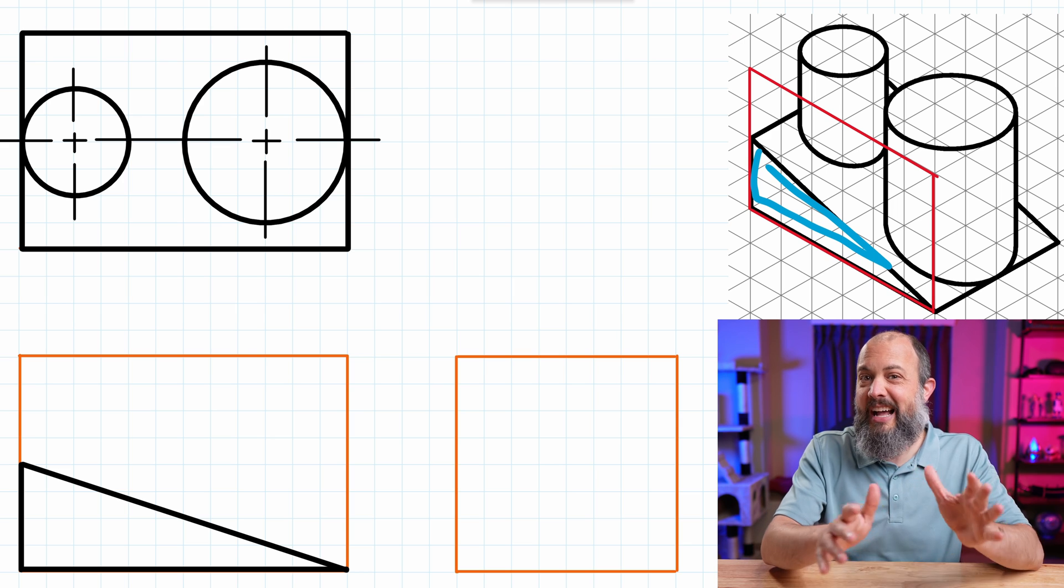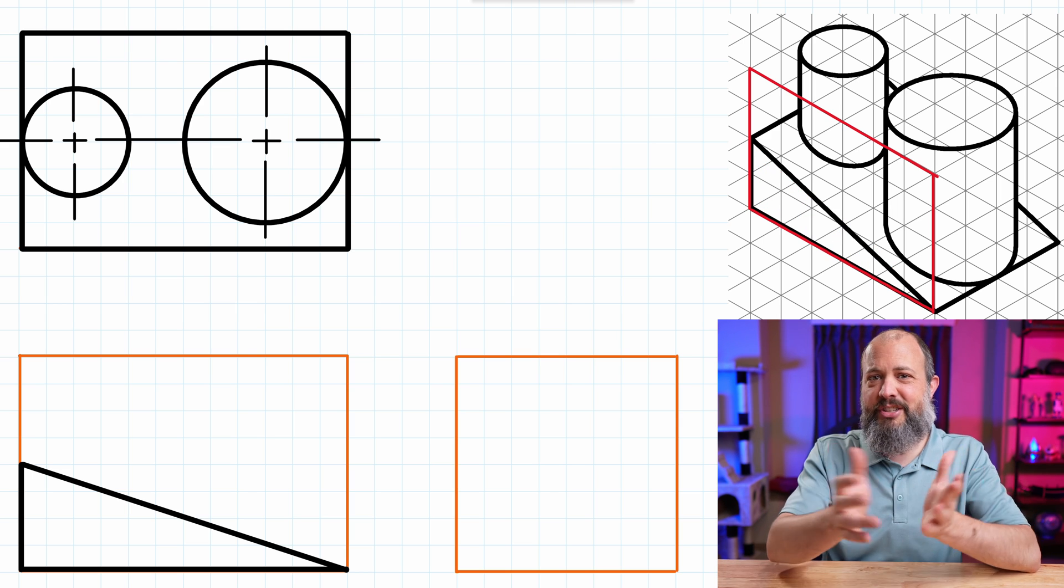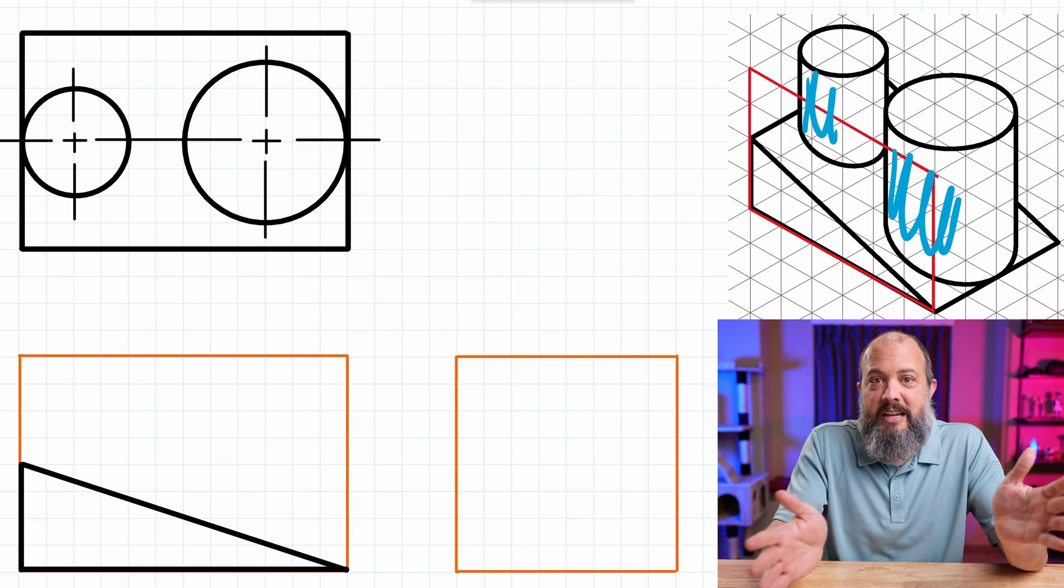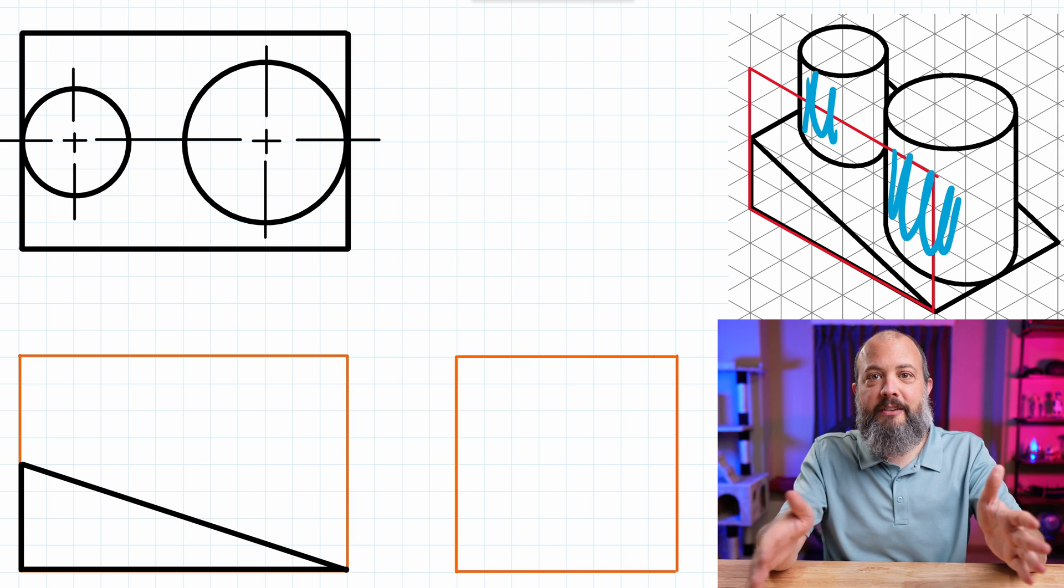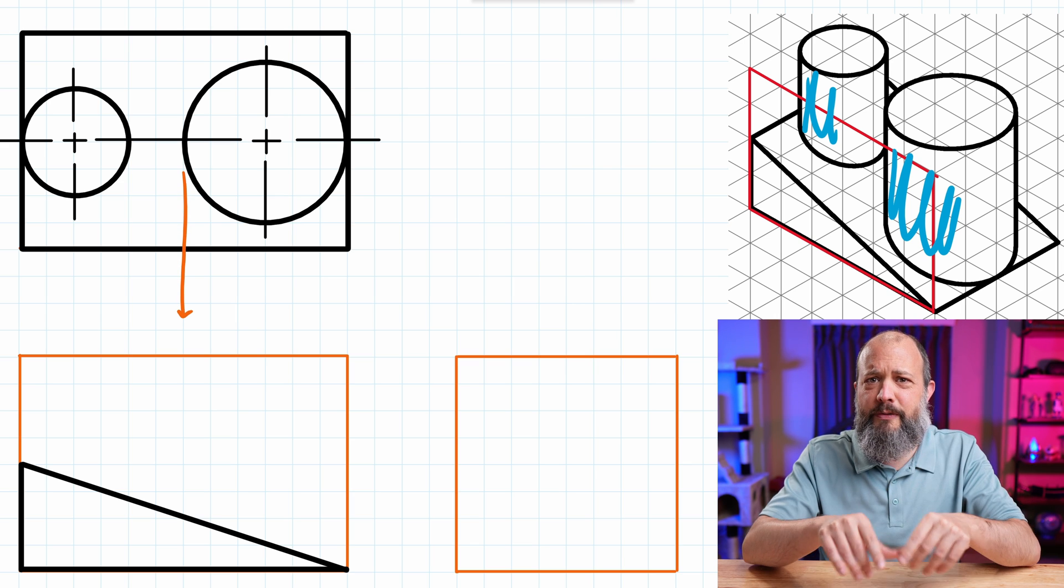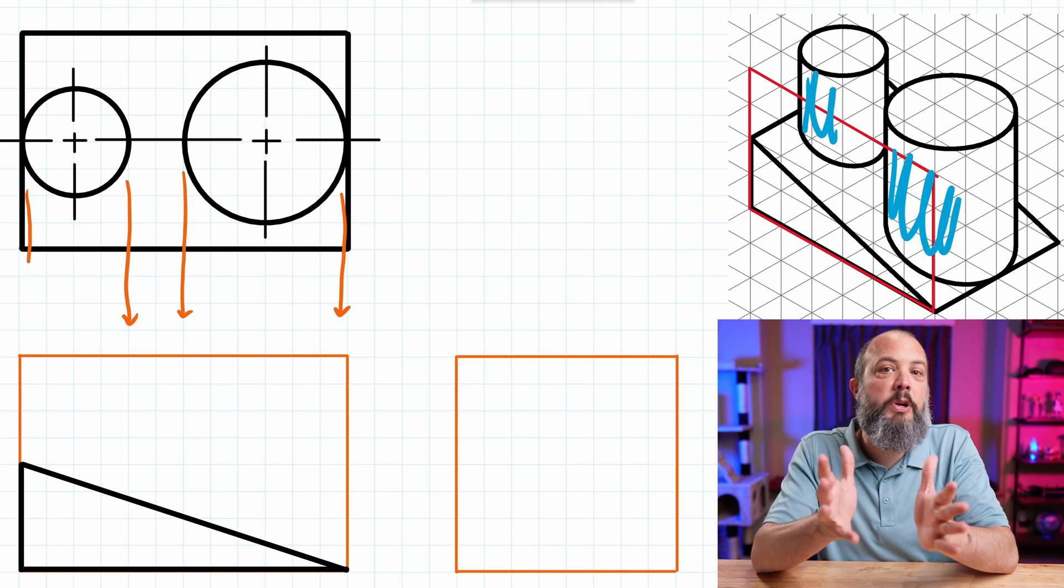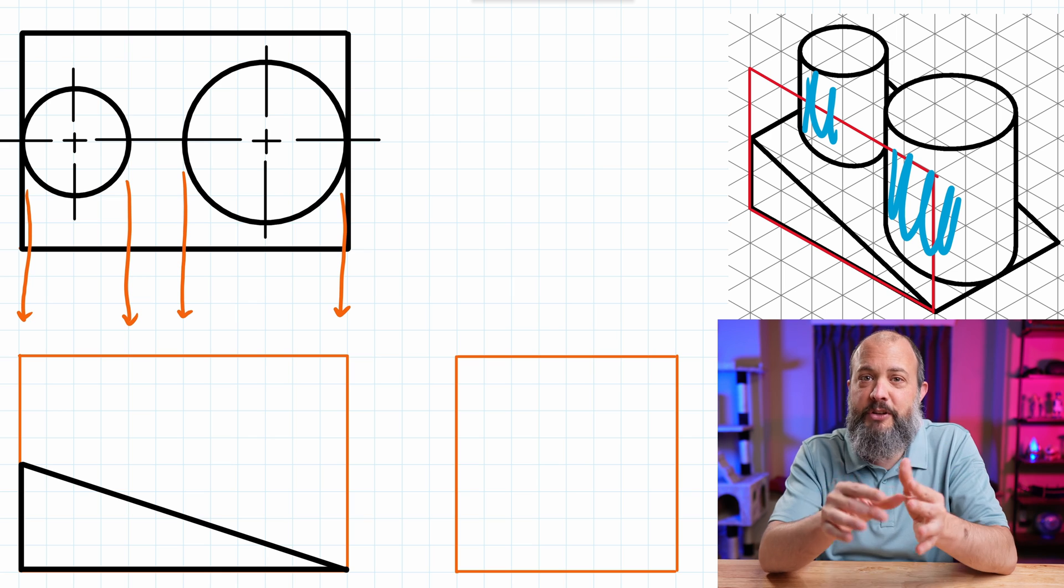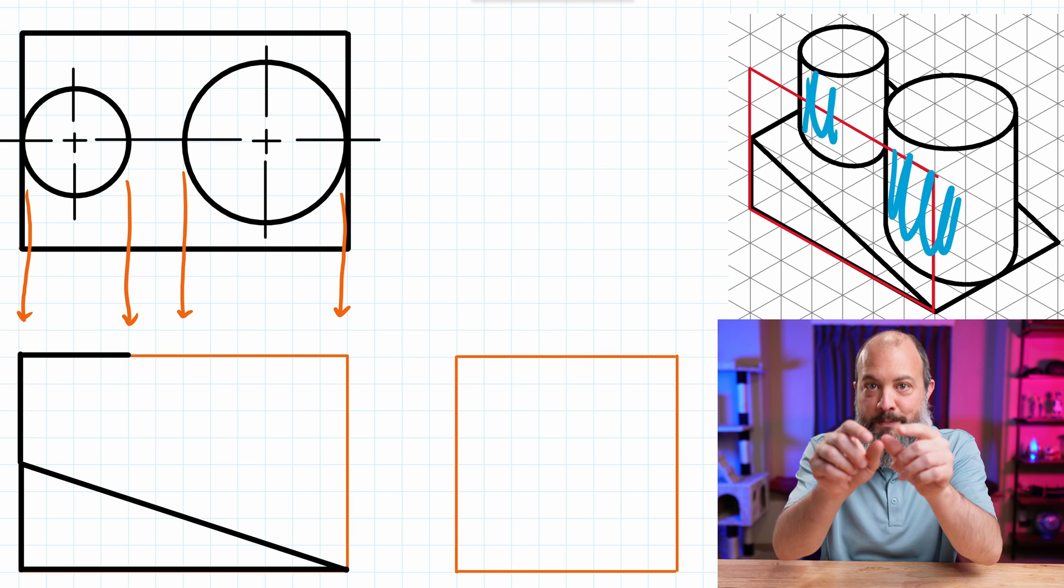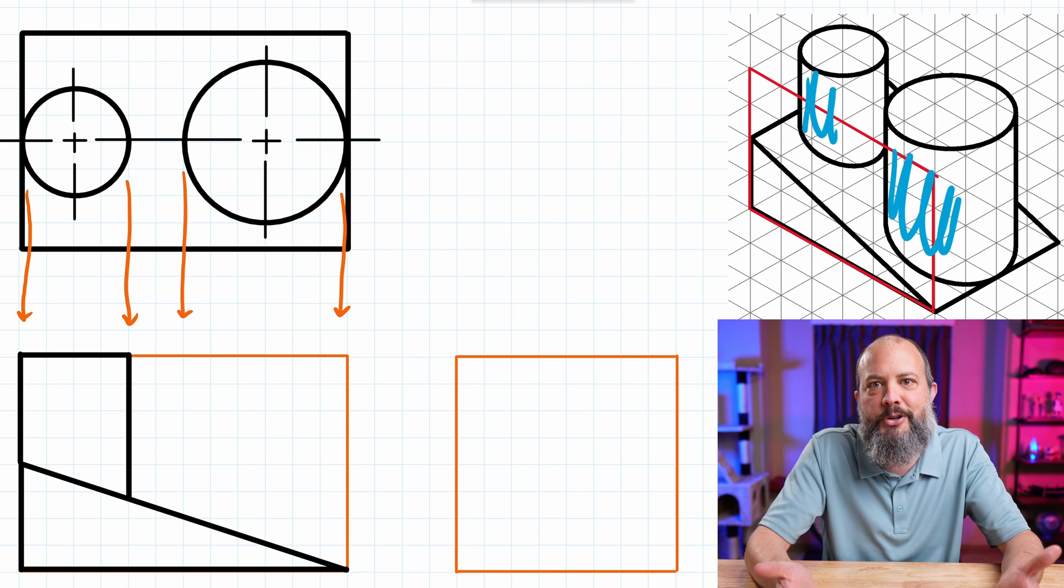Cylinders, when viewed from the side, just look like rectangles. You can't actually see the roundness at all. It just looks like a rectangle. So the left and right sides go all the way to the edge of the part. And for finding the parts in the middle, I'm just tracing straight down from the top view. This is why it was really important to make sure that the left and right quadrants are in the right location, because I'm going to use those locations on the top view to measure straight down to line up with the front view.